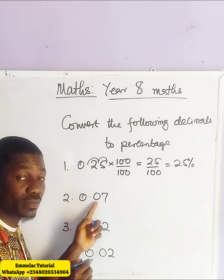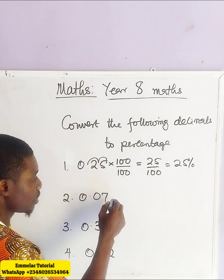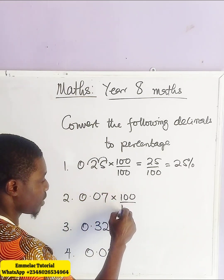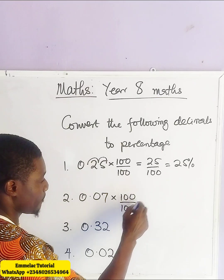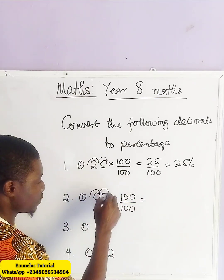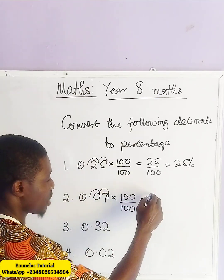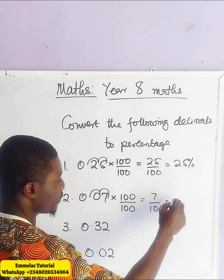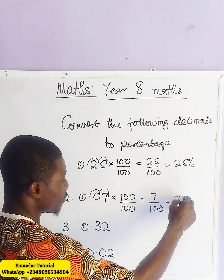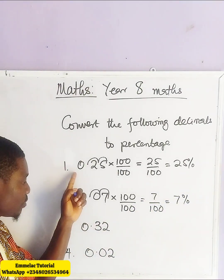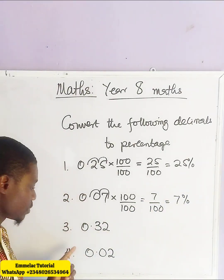Now here the same thing. How many digits after the decimal? You have two. So multiply — one, two. So here you have seven over 100, giving us 7%.